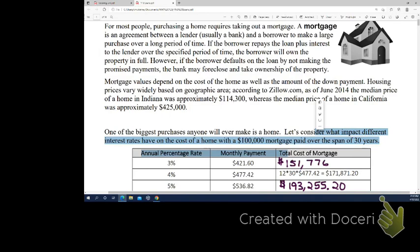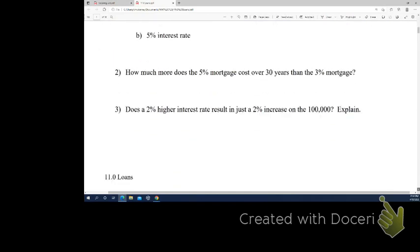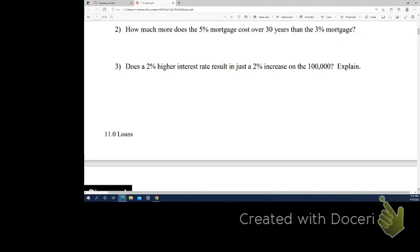So then, how much more does the 5% mortgage cost over the 30 years than the 3%? How could we find that? Yep, just subtract B and A. So, if I subtract that, then I got $41,479.20. Anyone agree? Please tell me if that's not what you got, because who knows? Okay, wonderful.